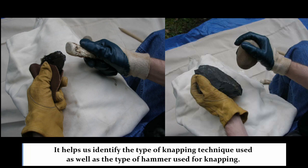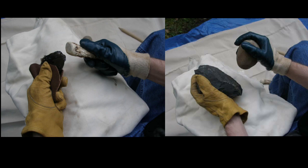For example, larger flakes are usually removed by hard hammer direct percussion technique whereas secondary flaking and retouching is usually done using a soft hammer which is either a bone, wood or an antler.